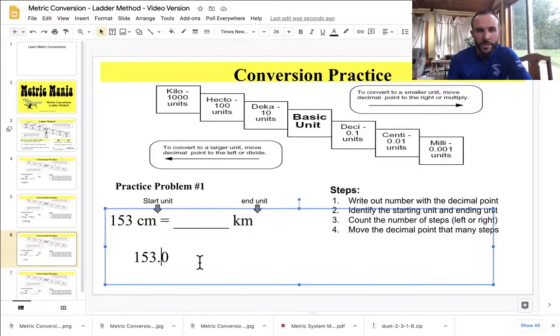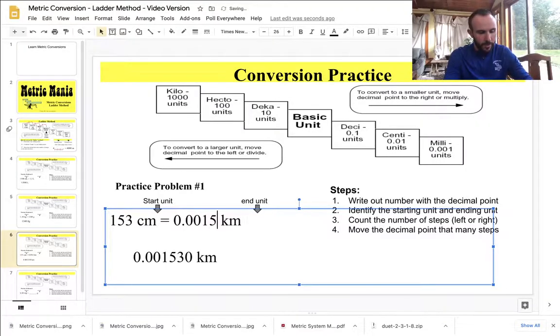So I have to jump this 5 jumps to the left. So here it is. Ready? 1, 2, 3, 4, 5 jumps. And just double check. Here's where it was. 1, 2, 3, 4, 5 jumps. That was a lot of jumps. So now I am left with 0.00153 kilometers. That's a really small number. 0.00153 kilometers. And that's our final answer.